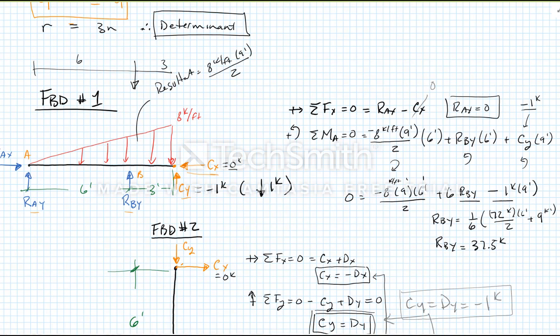And then the last equation I need to solve for is for RAY. I'm going to jump up here. Sum of the forces in the Y direction have to equal zero. Up being positive. So I get RAY minus, this up here is 36 kips.